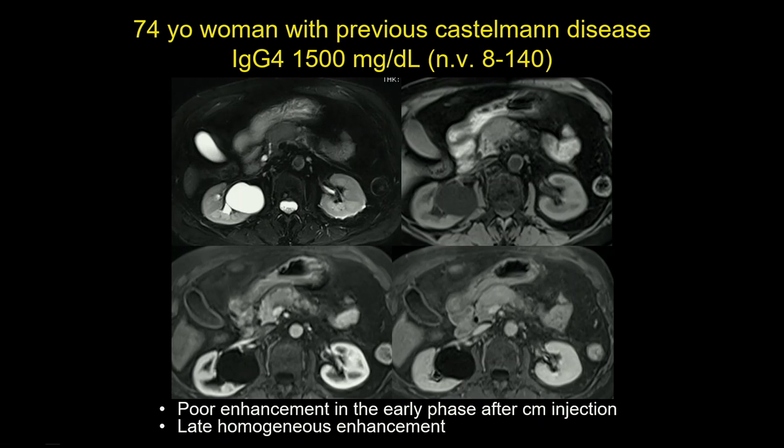For focal appearance: hypointense lesion, poor enhancement in early phase, homogeneous late enhancement — these are quite specific imaging findings. In one patient with a history of Cushing's disease, IgG4 was 1,500 — normal values are up to 140 — which is highly specific for IgG4 disease.